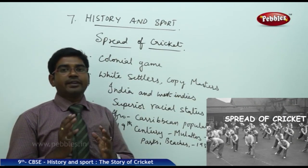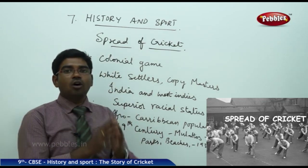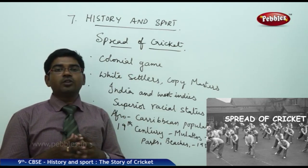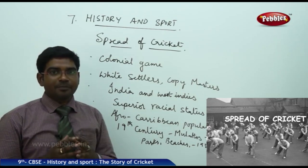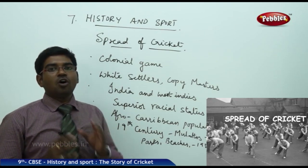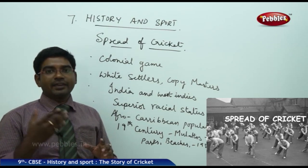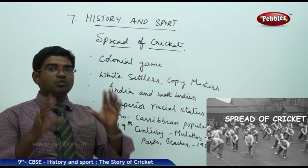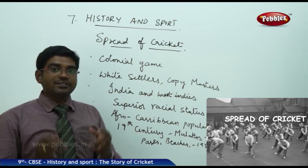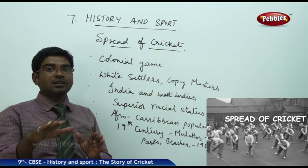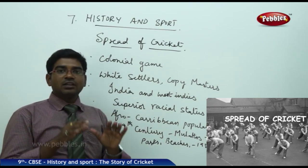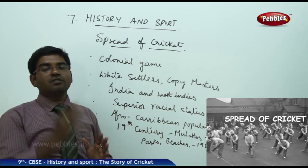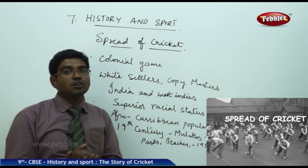Cricket did not spread as widely as hockey or football, which are played internationally. Cricket was restricted only to colonial countries where white settlers played the game — like Australia, Zimbabwe, West Indies — or people who tried to copy their colonial masters, like in India. The game spread only in regions once dominated by the British. White settlers felt it was a mark of racial superiority to play the game, and Indians and Afro-Caribbeans were actively discouraged and excluded from participating.